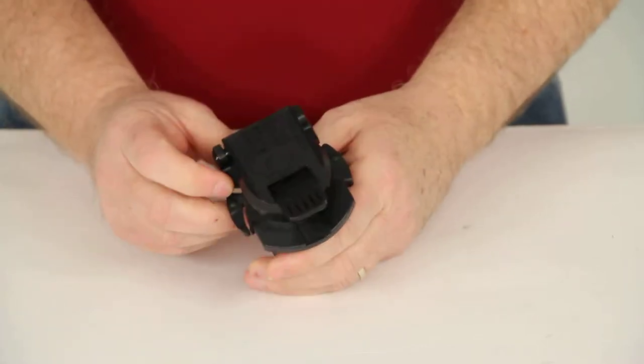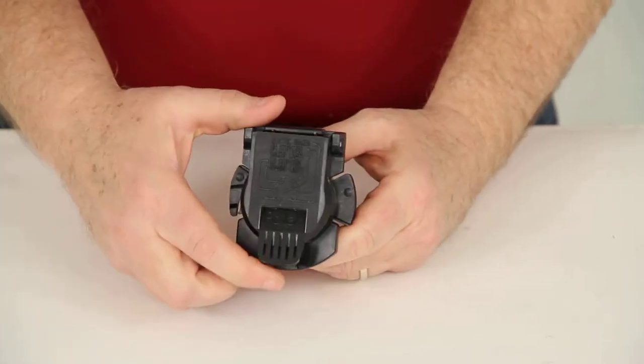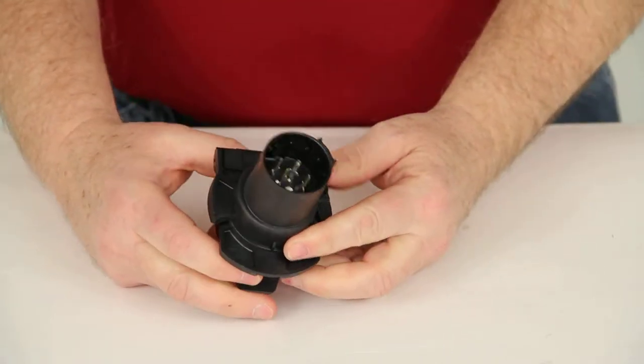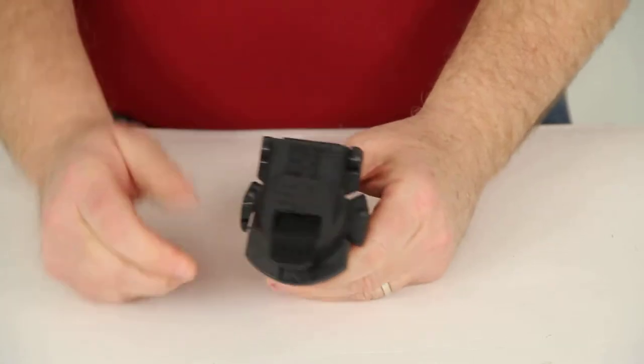Today we're going to review part number PK-11916. This is the twist-in 7-pole RV style trailer connector for Chevy and GMC vehicles.